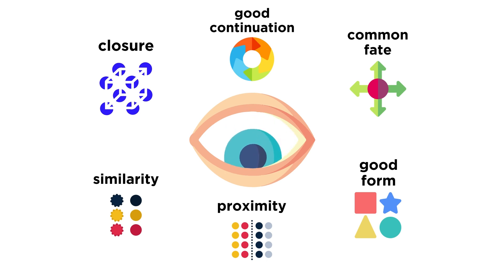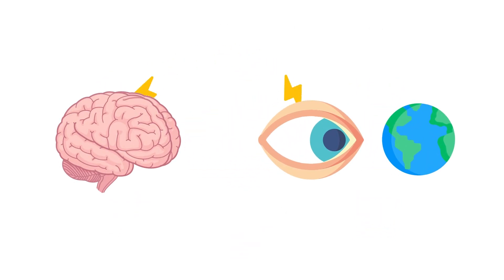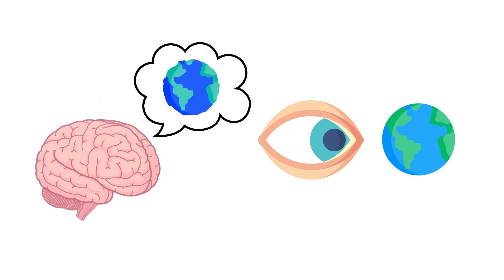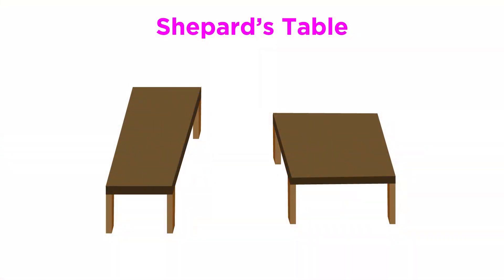Remember, the main goal of sensation and perception is to give us an internal representation of the world around us. But how accurate and objective is this representation? As it turns out, not as perfect and accurate as one might think. We are susceptible to a variety of visual illusions, often due to visual context and expectations. Let's take a look at the classic illusion, the shepherd's table.